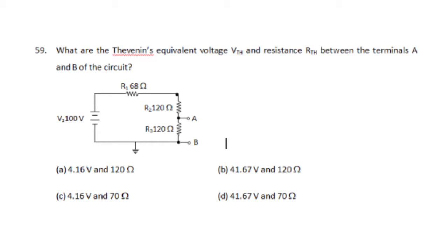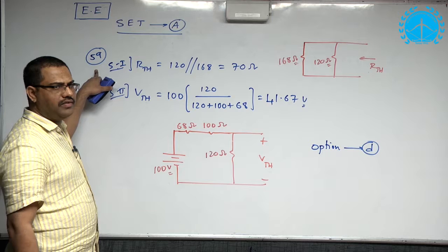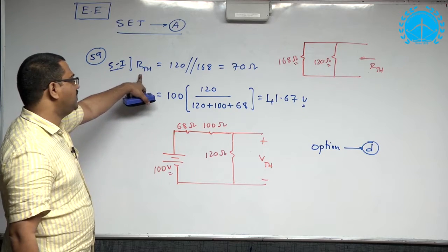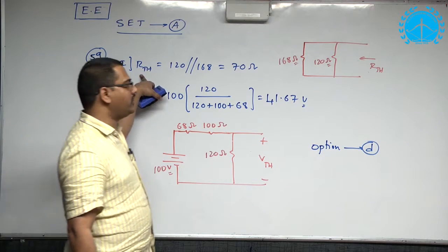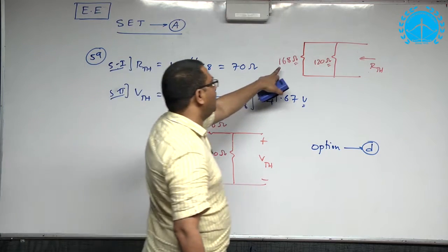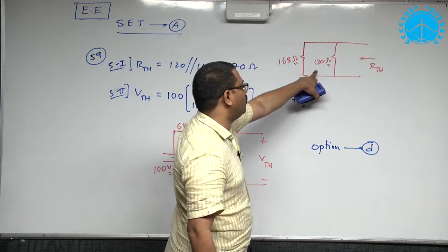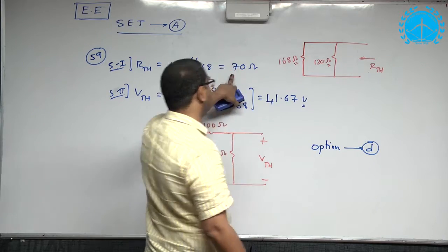Question number 59, he is asking the Thevenin's equivalent, very straightforward. Thevenin's resistance, open circuit resistance: 100 plus 68 is 168, in parallel to 120, which is 70 ohms.